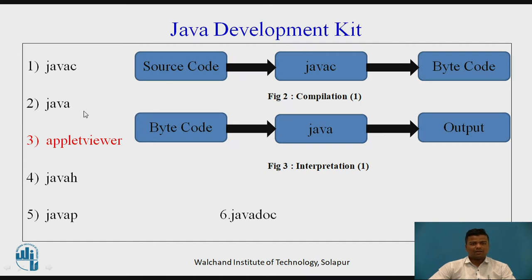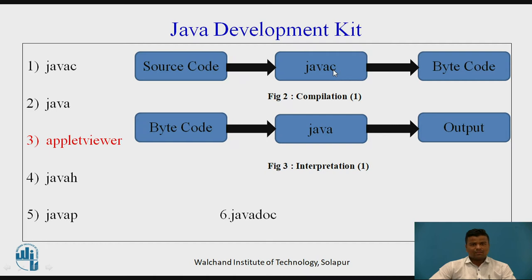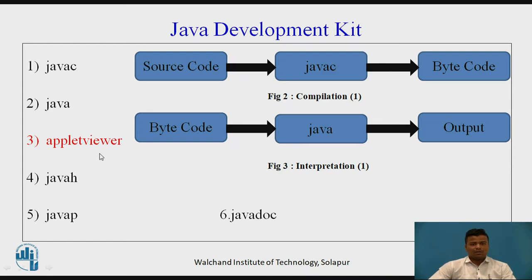Java Development Kit consists of different files: javac (Java compiler), Java interpreter, applet viewer, Java H, Java P, and javadoc. The Java compiler (javac) is the first stage — we have source code and want bytecode. The Java compiler is the intermediate point between the source code and the bytecode. Once we have the bytecode, we convert it to output using the Java interpreter. Applet viewer is a JDK file used to design different types of internet web pages, which is not present in C++ or C.